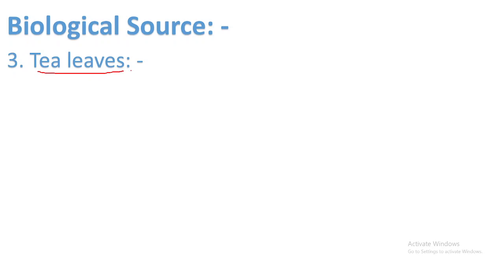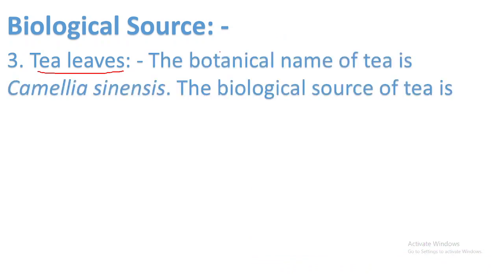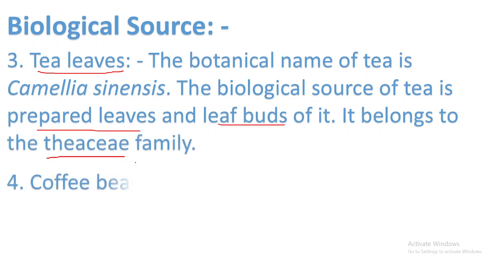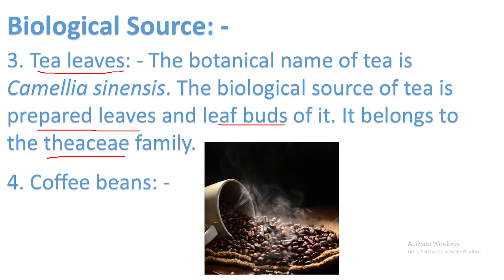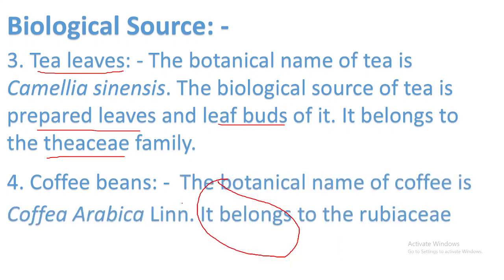Tea leaves contain theophylline and caffeine. The botanical name of tea is Camellia sinensis; the biological source consists of prepared leaves and leaf buds, belonging to the family Theaceae. Coffee beans also contain caffeine. The botanical name of coffee is Coffea arabica, variety Valinanus, belonging to the family Rubiaceae.